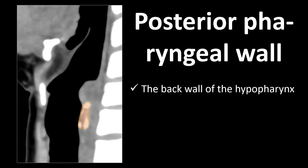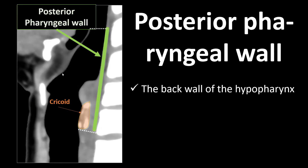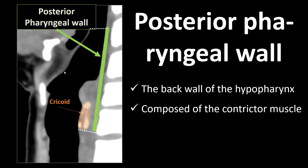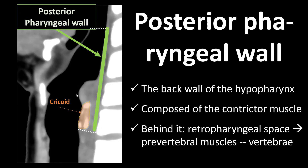The next subsite is the posterior pharyngeal wall — basically the mucosa-lined back wall of the hypopharynx. The inferior surface of the cricoid is the inferior border of the hypopharynx, and the superior border is indicated by the tip of the epiglottis. The posterior pharyngeal wall contains constrictor muscle, likely parts of the middle and inferior constrictor. Behind it we have the retropharyngeal space, prevertebral muscles, and vertebrae, so a tumor in this location will tend to invade those underlying spaces.